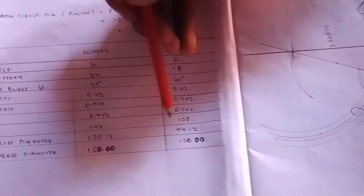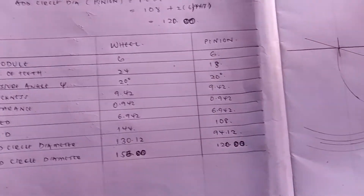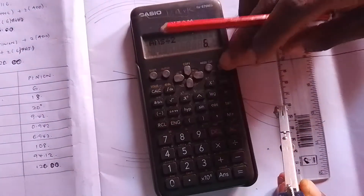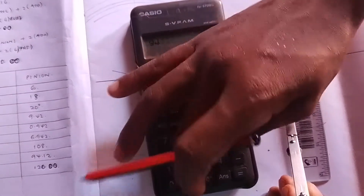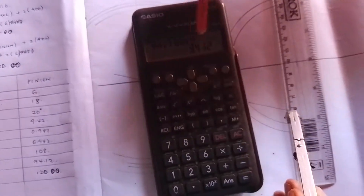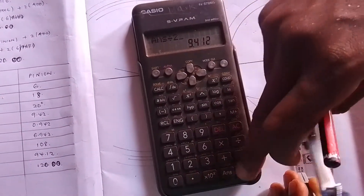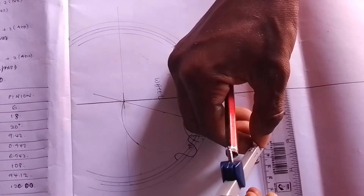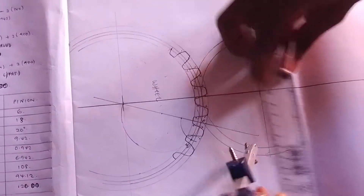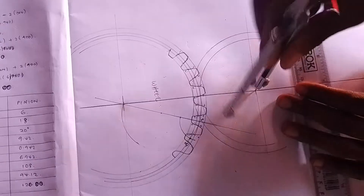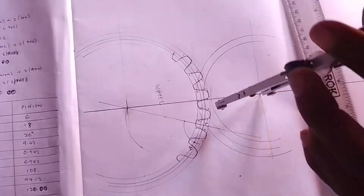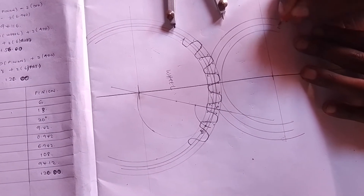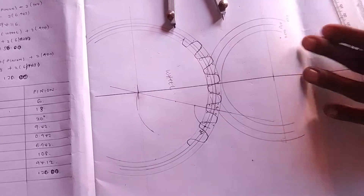Now you want to construct the dedendum. You come back to your table. The dedendum circle diameter is 94.12 millimeters. Take your calculator: 94.12 divided by 10 gives 9.412; divided by 2 gives 4.78. From this point, you draw 4.78 centimeters. You stand on this point and draw your dedendum. Here we have achieved the addendum circle diameter and the PCD.